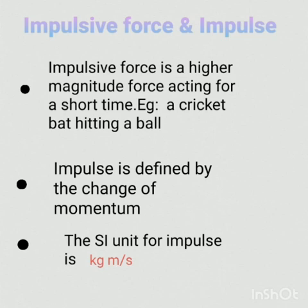Impulse is the impact produced because of the impulsive force. For example, when somebody slaps you, he is applying a greater force within a short period of time — that is known as impulsive force. Due to that slapping, you may get some changes in your face, and that impact is known as impulse. The impulse can be calculated by the product of force into time. It is represented by J: J is equal to F into T.